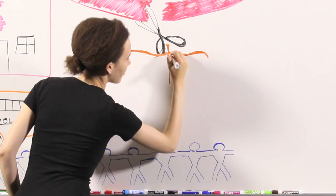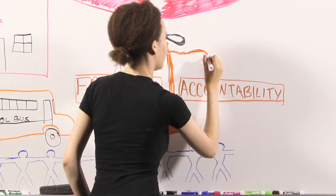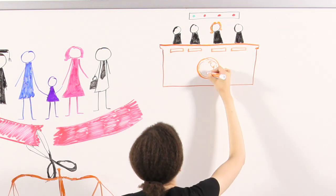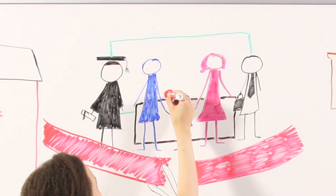In exchange for that freedom, charters are held accountable by their authorizing body, usually a school board, the county office of education, or the state board of education, and by the parents who choose to send their children to those schools.